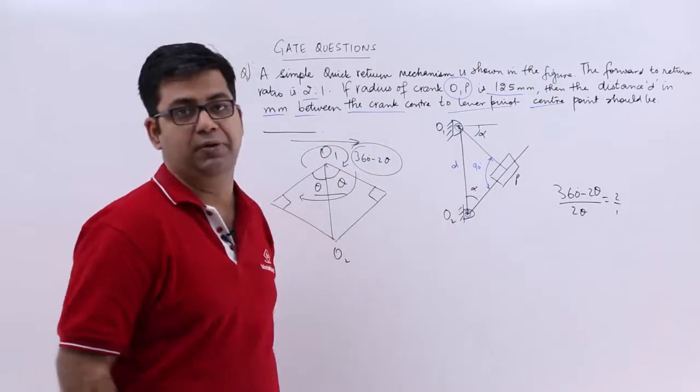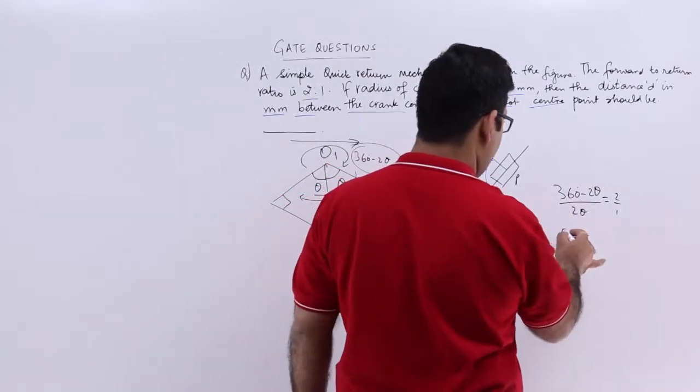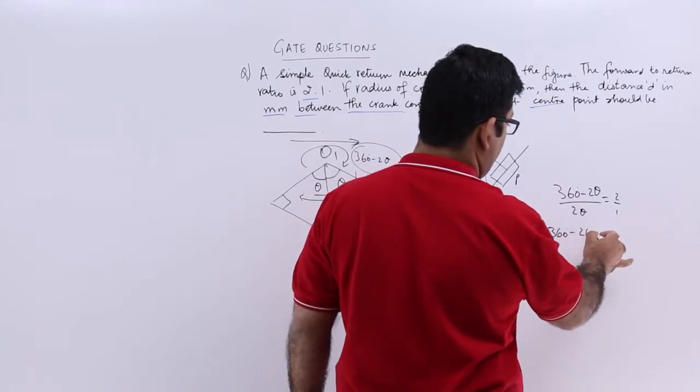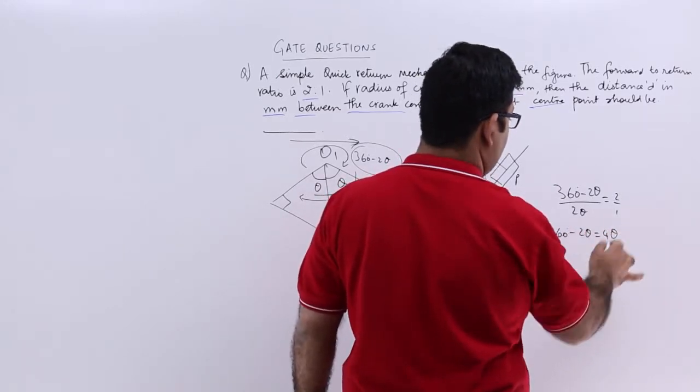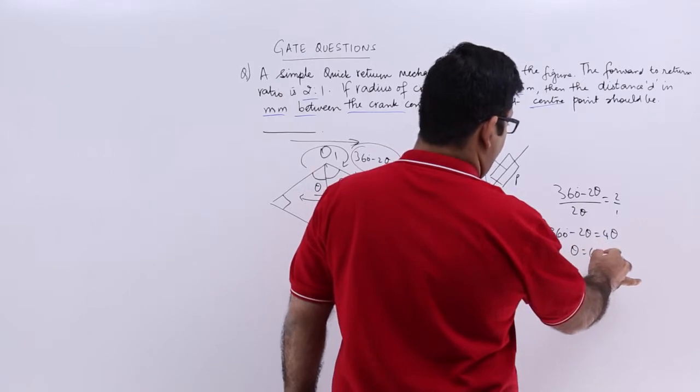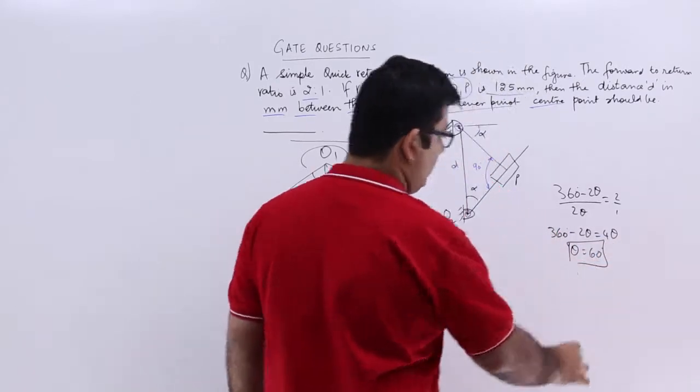From that, find out theta. So it will be 360 minus 2 theta is equal to 4 theta and theta would be 60 degrees.